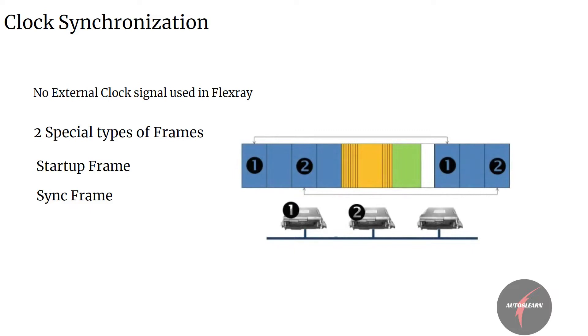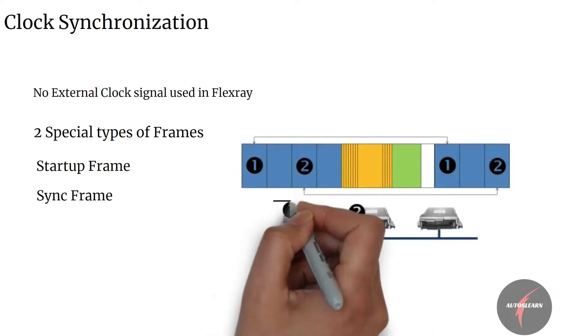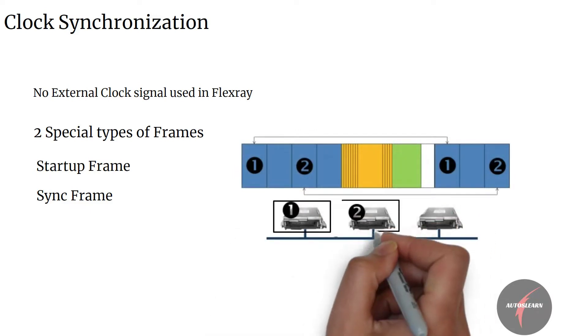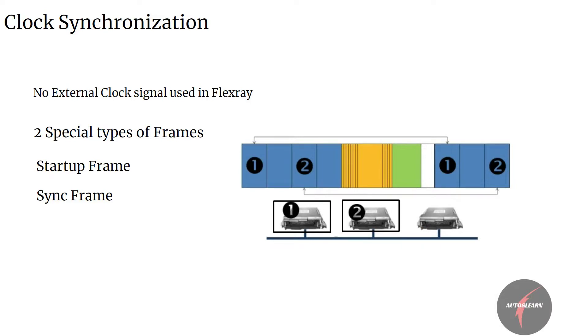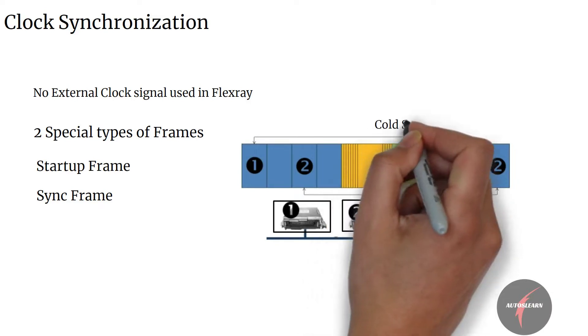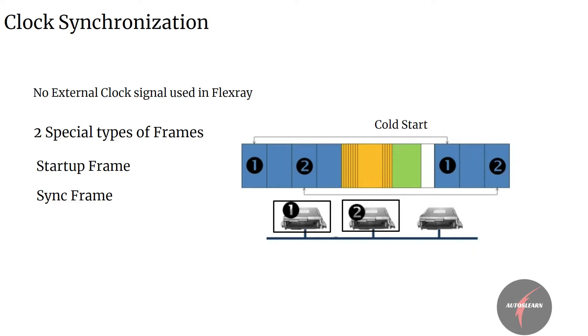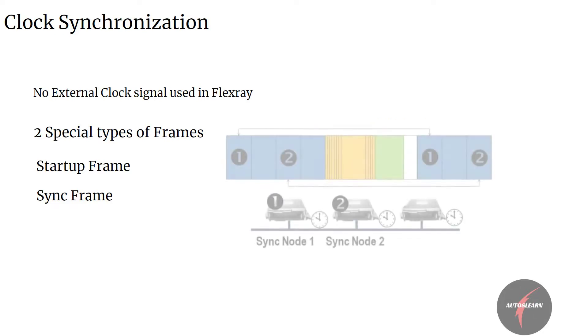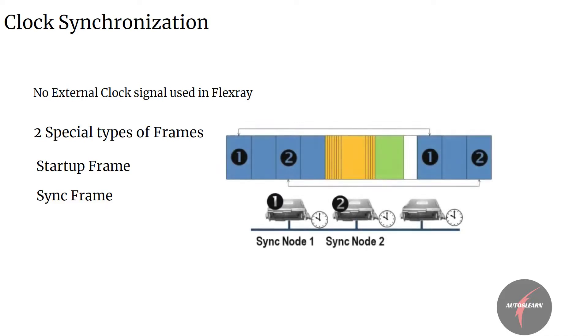The FlexRay cluster starts by at least two different nodes sending startup frames. The action of starting up the FlexRay bus is known as cold start, and the nodes sending the startup frames are called cold start nodes. The startup frames are analogous to a start trigger which tells all the nodes on the network to start.